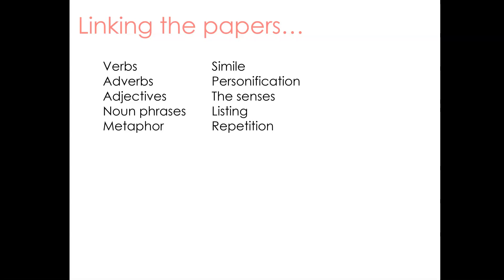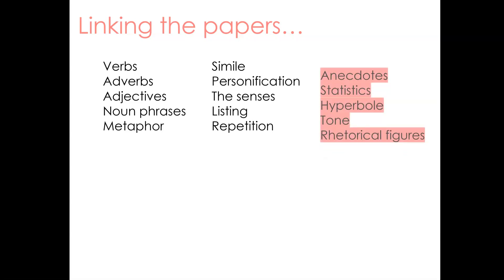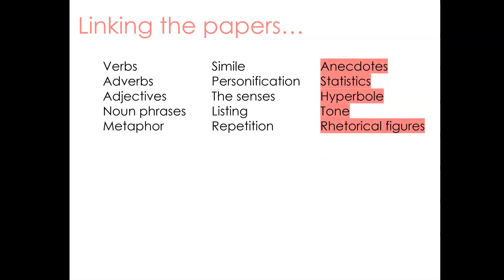Those devices can cover both fiction and non-fiction, but there might also be some devices more specific to Paper 2 for writers conveying a strong viewpoint. For Paper 2, looking at rhetorical figures — focusing on things like ethos, logos, and pathos — will be useful, as well as devices like anecdotes and statistics, things that might be used to back up and support an argument.